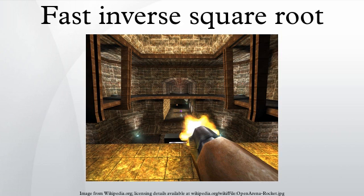The inverse square root of a floating-point number is used in calculating a normalized vector. Since a 3D graphics program uses these normalized vectors to determine lighting and reflection, millions of these calculations must be done per second. Before the creation of specialized hardware to handle transform and lighting, software computations could be slow. Specifically, when the code was developed in the early 1990s, most floating-point processing power lagged behind the speed of integer processing.